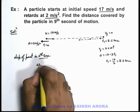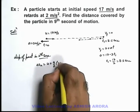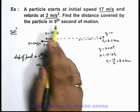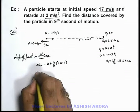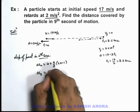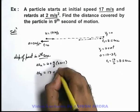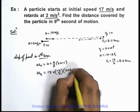The formula for nth second of motion is u plus (a/2)(2n-1). We are required to analyze the motion in the ninth second, so we find displacement in ninth second. This will be 17 plus a/2, which is -2/2, times (2×9-1).